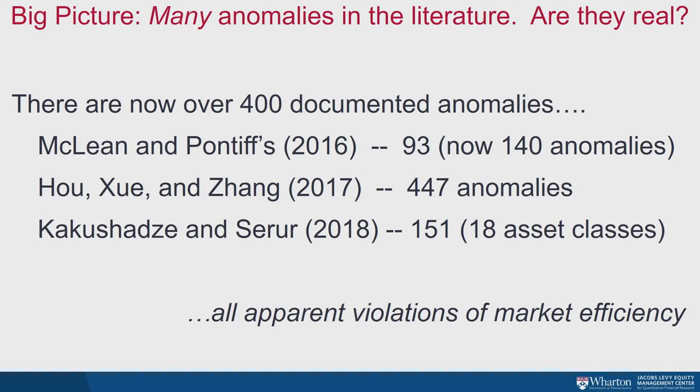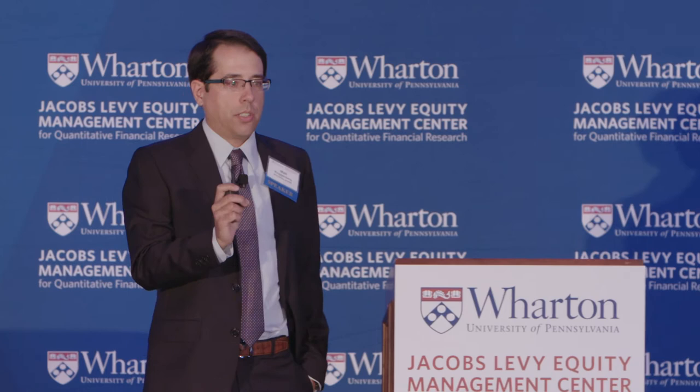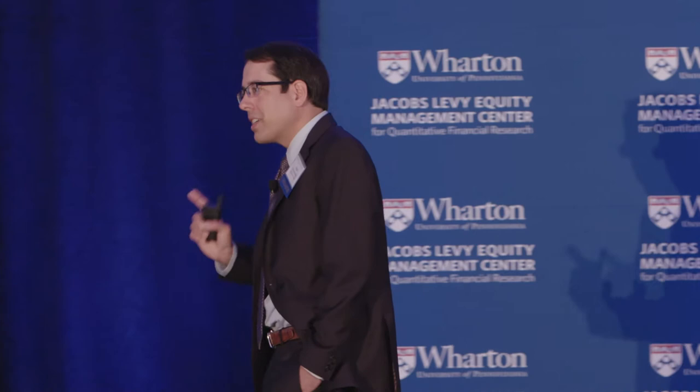If you believe all of these and take them at face value, they are all apparent violations of market efficiency, so there are big-picture implications. That having been said, there's an interesting result in a lot of the recent academic literature: several papers have all come to the same conclusion—when you look at the data today, most of those anomalies are not there. They're gone. So what's going on here?